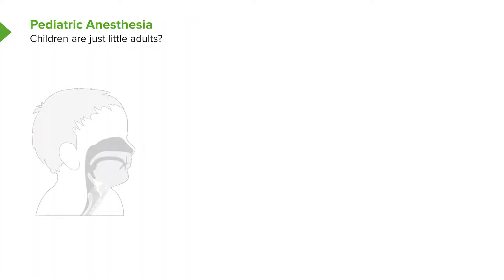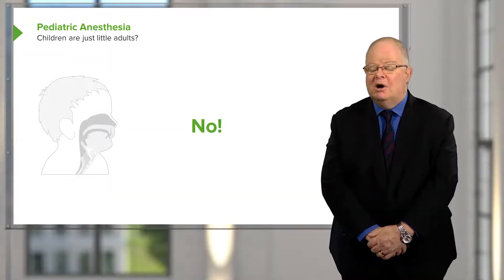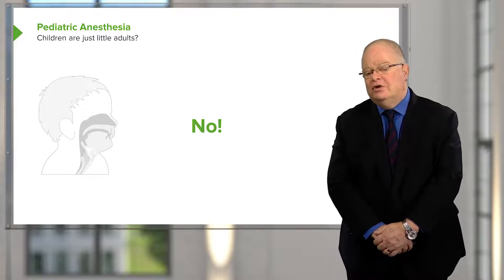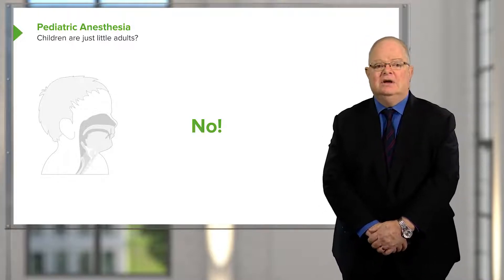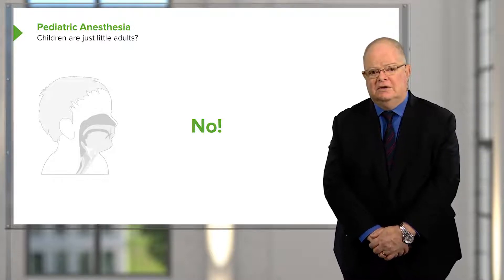We're going to start with children. If you think children are just little adults, you're wrong. They are very much different from an anesthetic perspective. The anatomy is different, the difficulties involved in managing them are very different, and there are some risks associated with pediatric anesthesia that are not really associated with adult anesthesia.